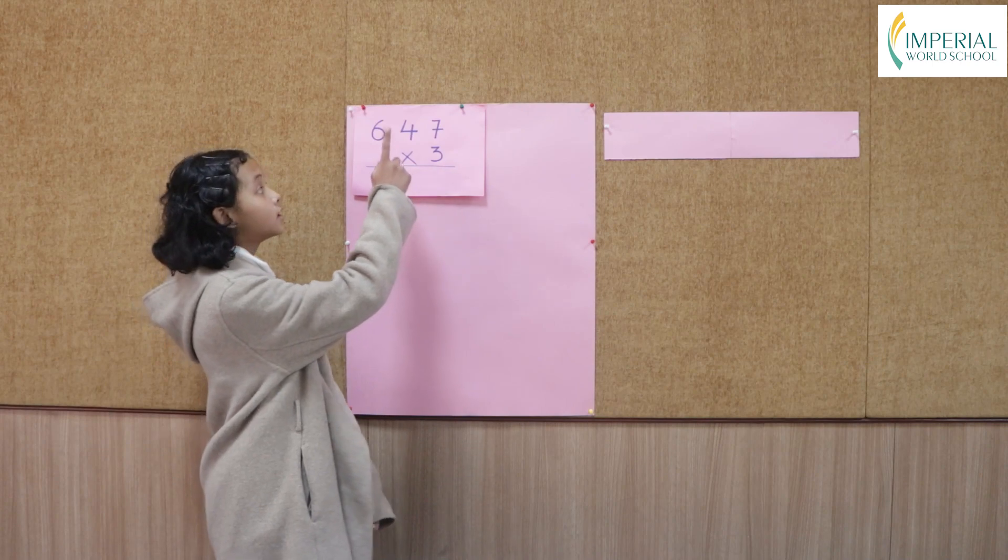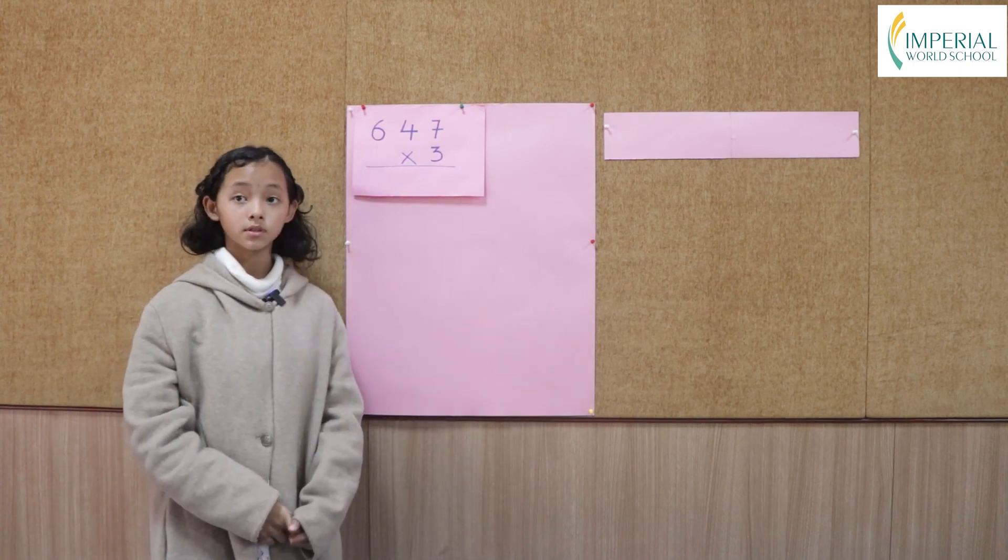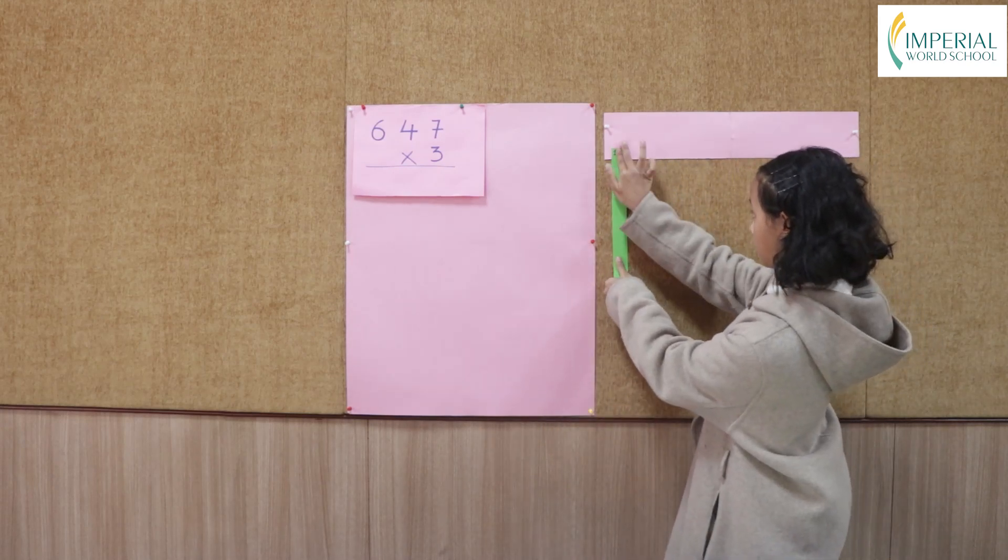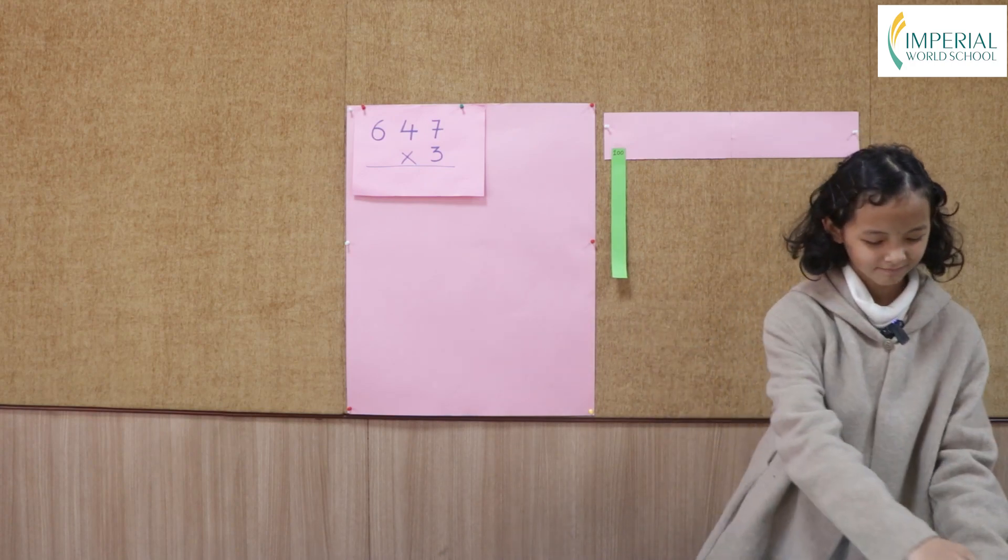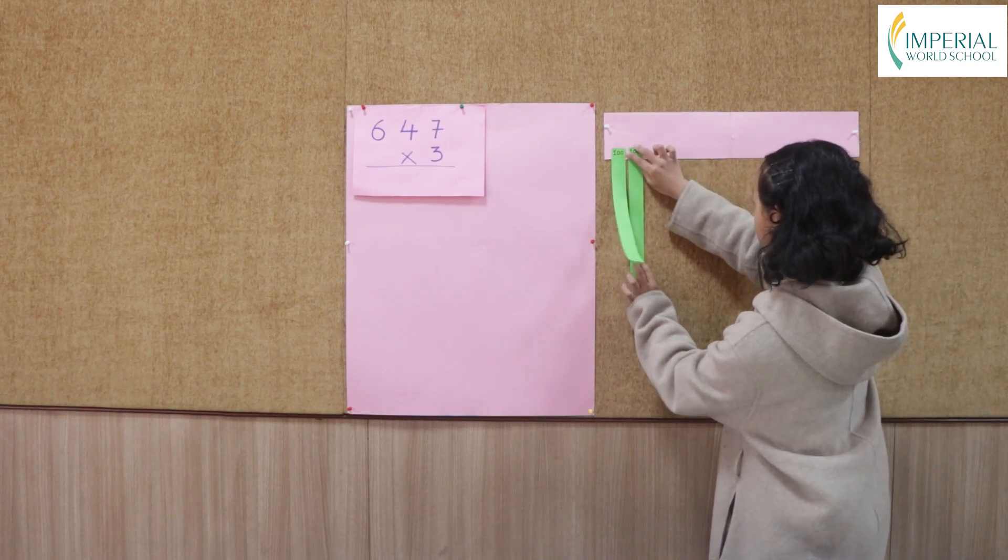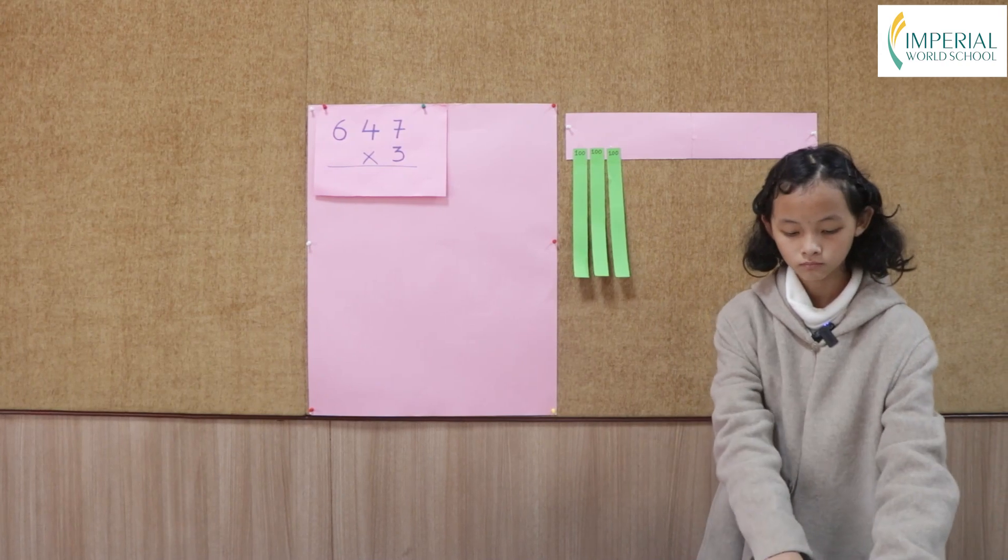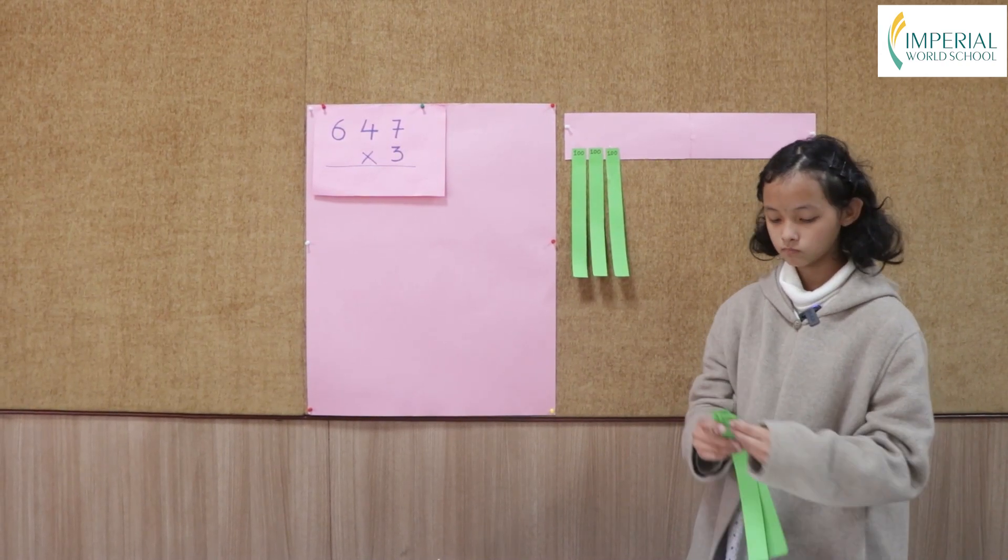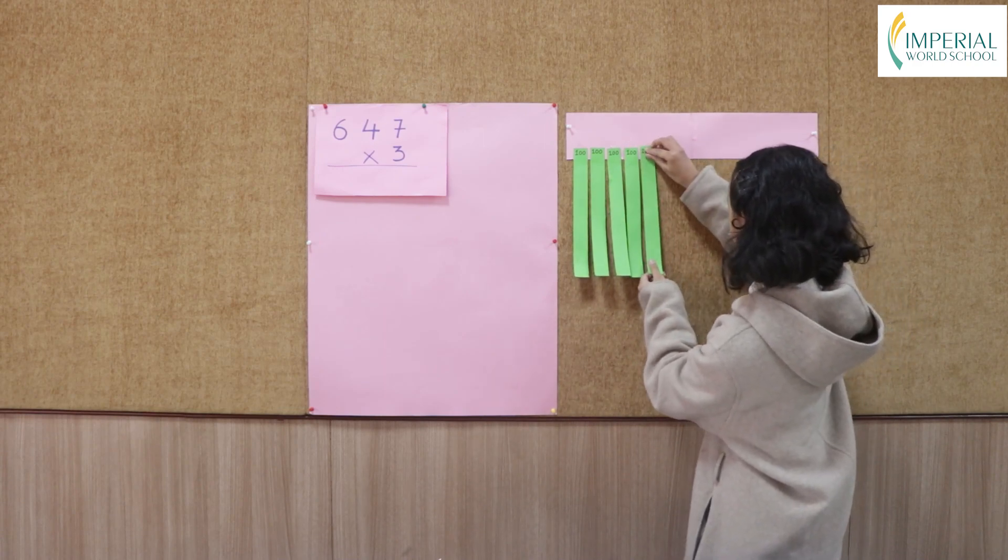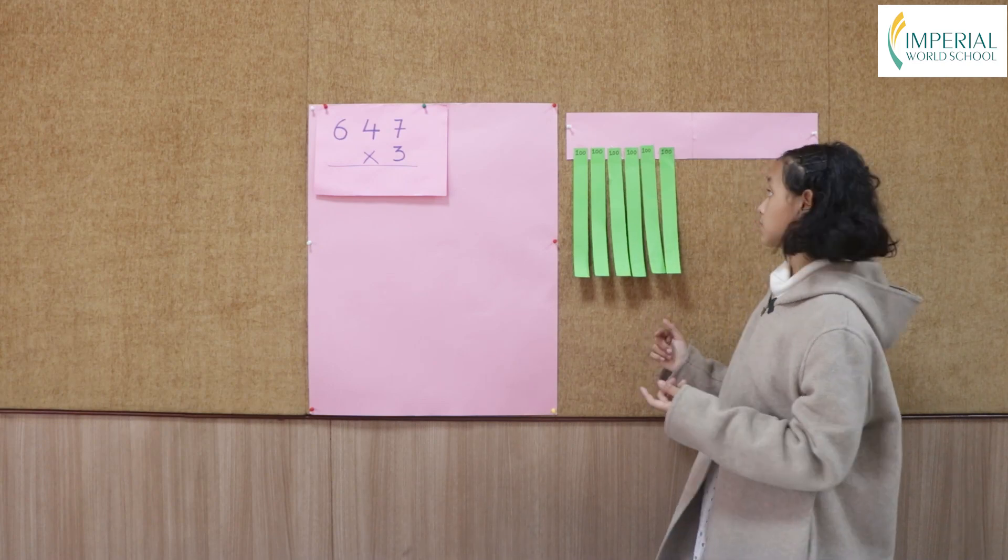So the question is 647 times 3. The place value of 6 is 100, so I'm going to take 600. Now we have 600. Let's write 600 on top of them.